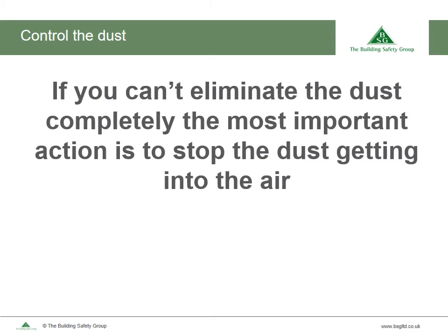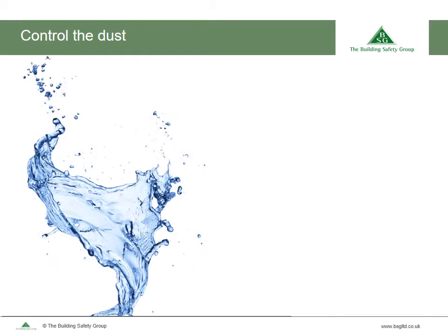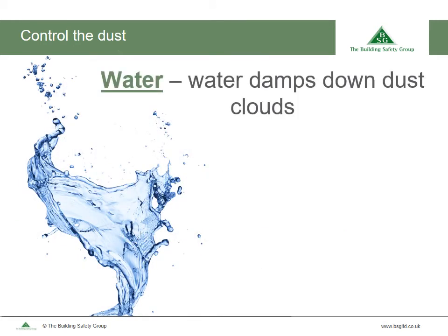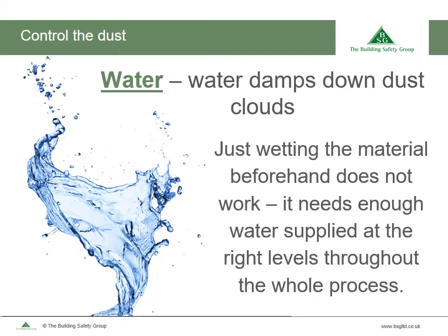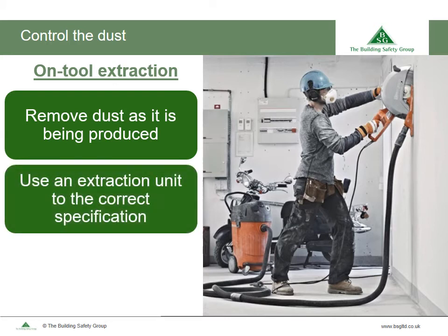If you can't eliminate the dust completely, the most important action is to stop the dust getting into the air. There are two ways: water suppression or on-tool extraction. Water suppression damps down dust clouds, but it needs to be used correctly — enough water supplied at the right levels for the whole time the work is being done. Just wetting the material beforehand doesn't work. On-tool extraction removes dust as it is being produced. It is a type of local exhaust ventilation that fits directly onto the tool, consisting of the tool, the capturing hood, the extraction unit, and tubing. Use an extraction unit to the correct specification — high, medium, or low-class filter. Don't just use a general commercial vacuum cleaner.